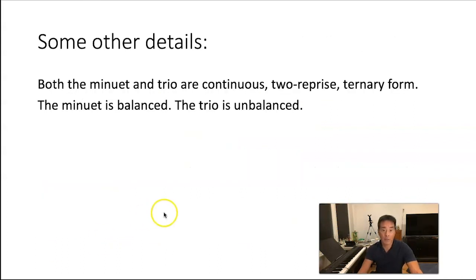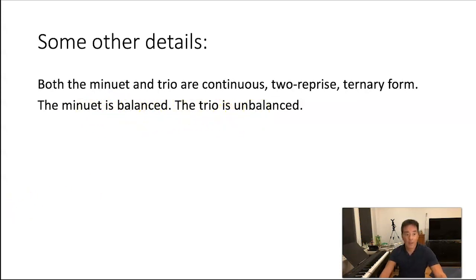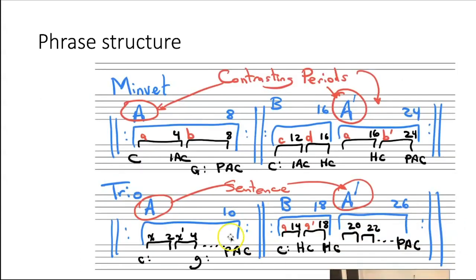Lastly. Some details that we talked about before. Both the minuet and trio are continuous, because they change key when they get to the repeat sign. So you have to continue. Two reprise. They both, all the sections repeat. And ternary form. The minuet is balanced. And the trio is unbalanced. The minuet has all eight measure sections, the A, B, A, that are balanced. The trio has ten bars on the first section. Then eight. And then eight here. So it's a little bit unbalanced.